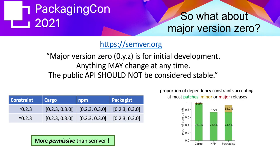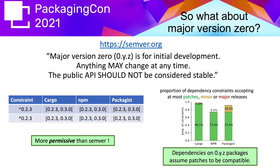Looking at dependency constraints on packages in the zero version space, we see that the constraints used do indeed accept patches in the large majority of cases: 96% for Cargo, and 73% for both NPM and Packagist. This confirms that dependents on 0.y.z packages assume patches to be compatible.